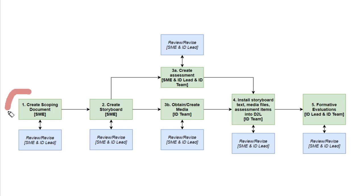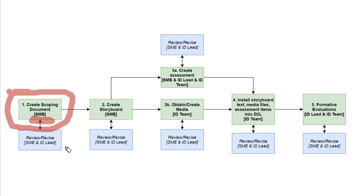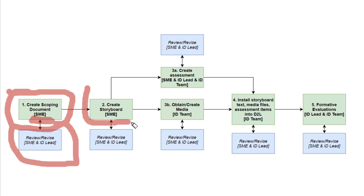The very first step in the process involves creating scoping documents for each of the micro-credentials based on the competencies that have been identified. The scoping document is the responsibility of the subject matter expert. The subject matter expert creates it and then passes it to the ID lead, who reviews it along with the subject matter expert to ensure that it constitutes a well-organized and essentially doable piece of instruction.